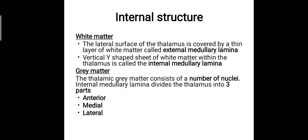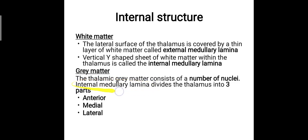The internal structure of the thalamus: the lateral surface is covered by a thin layer of white matter called the external medullary lamina. A vertical Y-shaped sheet of white matter within the thalamus is called the internal medullary lamina. The internal medullary lamina divides the thalamus into three parts: the anterior part, the medial part and the lateral part.